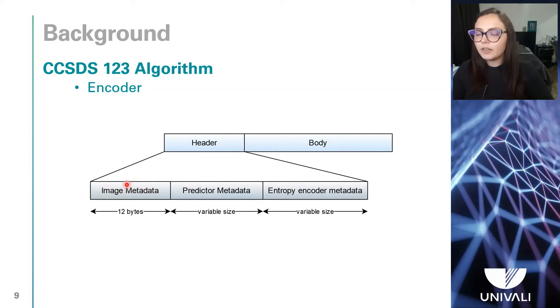The image metadata has 12 bytes and it contains information such as its sizes, sample type, and coding order. The metadata of the predictor has information regarding the parameters that are used in the prediction, and it has a variable size.